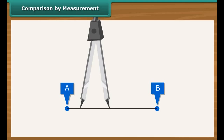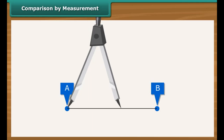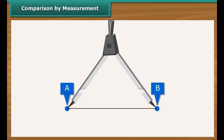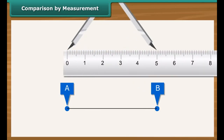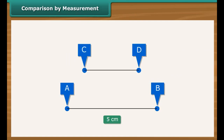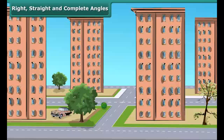Place the divider on AB such that the sharp end of one arm is on A and the sharp end of the other arm is on B. Measure AB by placing the divider on the ruler — write down the measurement of AB as 5 cm. Now measure CD in the same way — write down the measurement of CD as 3 cm. Therefore, AB is longer.